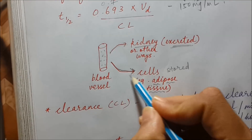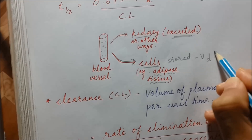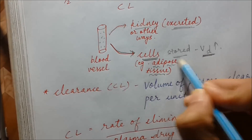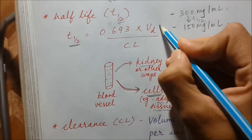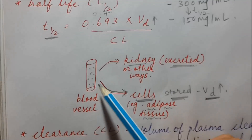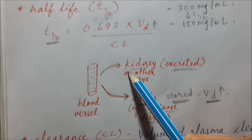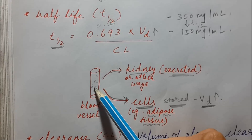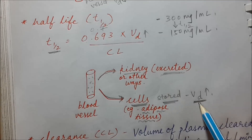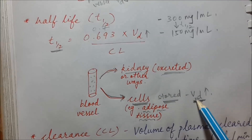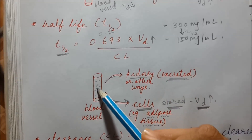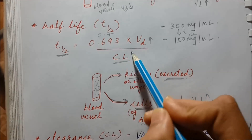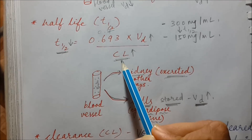If the drug is going towards the cell and it is crossing all barriers and reaching the cell, it means its volume of distribution is high — it will be stored in adipose tissue and its half-life will increase. If more drug is going towards the kidney — that is, more drug is being cleared — there will be less drug left in the blood vessel, and the half-life of the drug will decrease. So half-life is directly proportional to volume of distribution and inversely proportional to clearance.